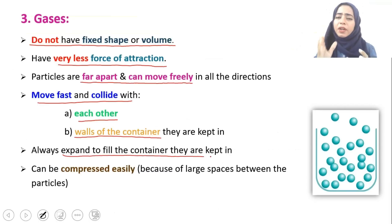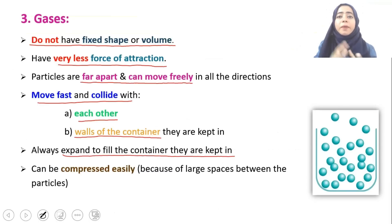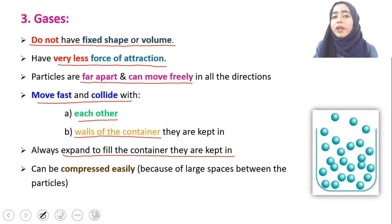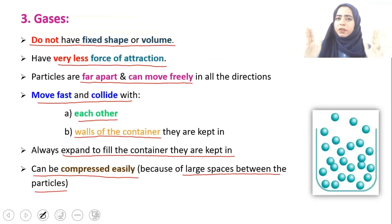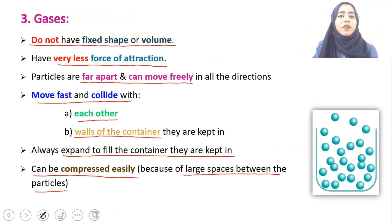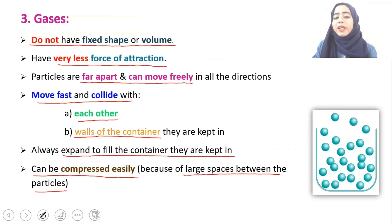When gas particles have maximum kinetic energy, they collide with each other and with the walls of the container, taking the shape of whatever container they are placed in. If we try to compress a gas and reduce its volume, it will be easily possible because gas particles have large gaps between them — so we can compress the gas and reduce its volume.